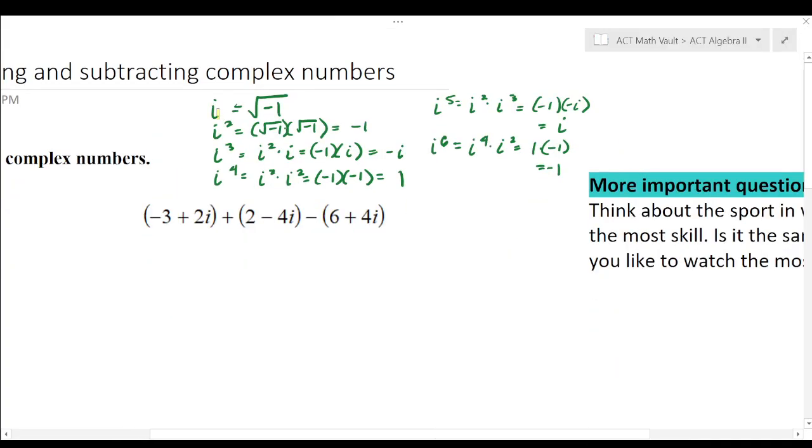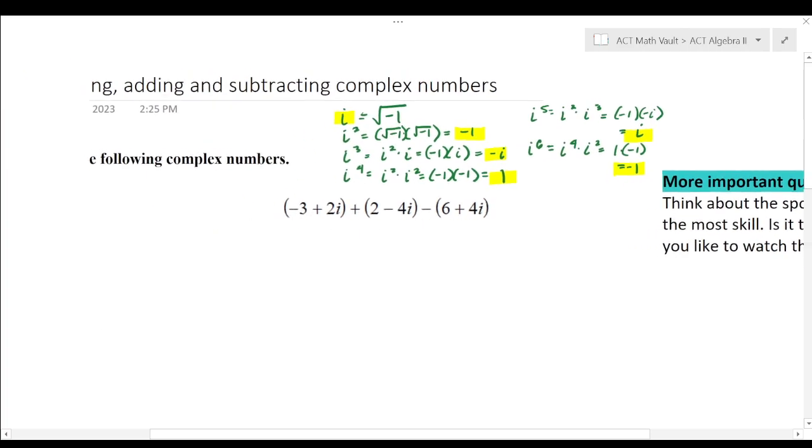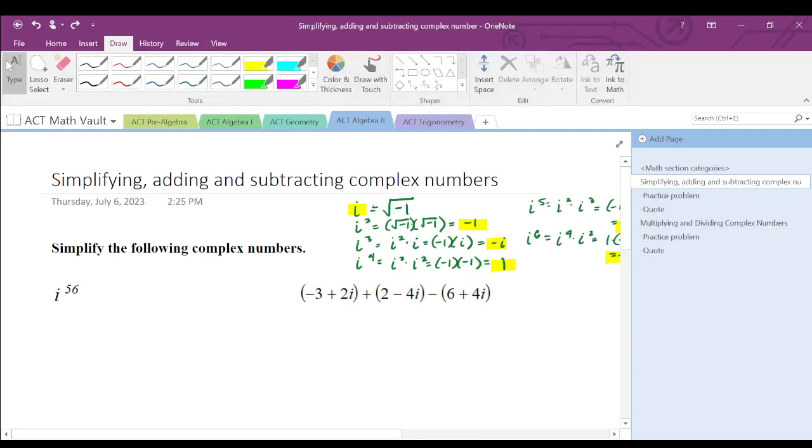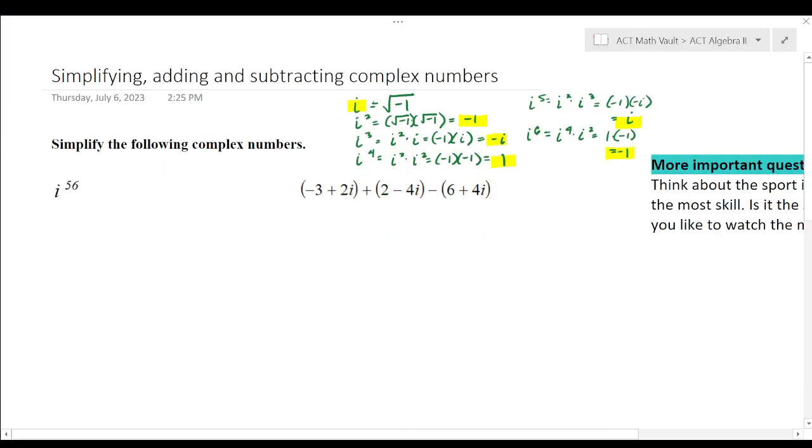So, after the fourth exponent, these start to repeat. So, we have i, negative one, negative i, one. I, negative one, then negative i, one. And that will repeat all the way until infinity in that same pattern, kind of similar to a clock, how a clock works.